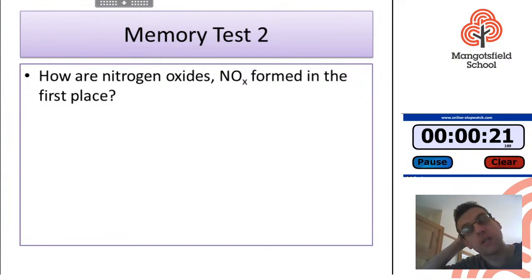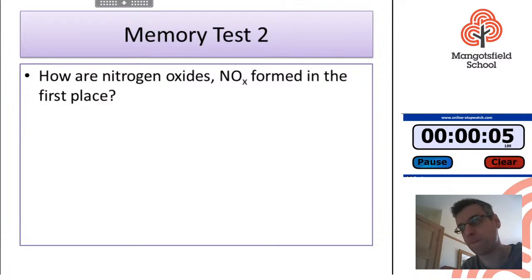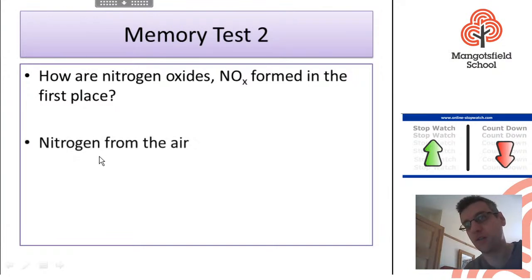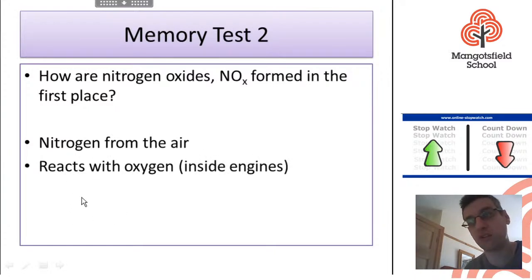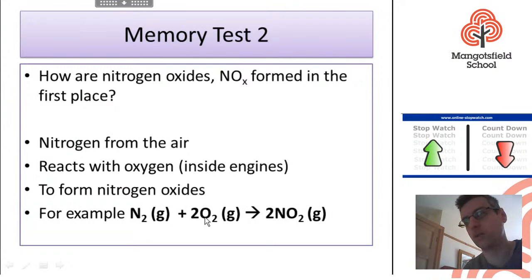How are nitrogen oxides formed in the first place? Why are they given out by cars? Petrol and diesel don't have nitrogen in them, so how does nitrogen oxide get formed? The nitrogen comes from the air — air is 78% nitrogen. The engine is hot enough to make the nitrogen from the air react with the oxygen from the air, forming nitrogen oxides. For example: N2 + 2O2 → 2NO2.